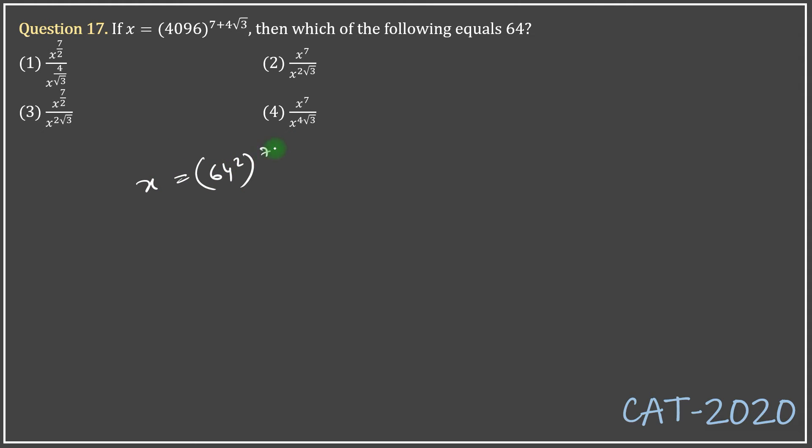I'll rewrite this question as 64 square equals x raised to the power 1 over 7 plus 4 root 3.